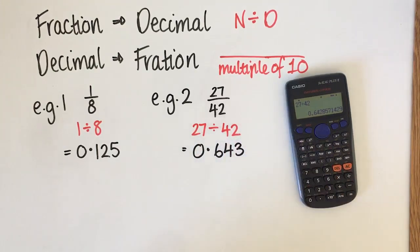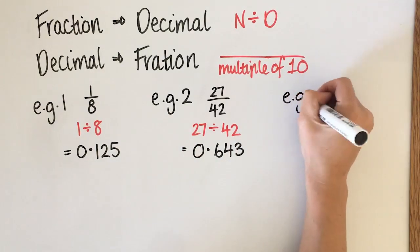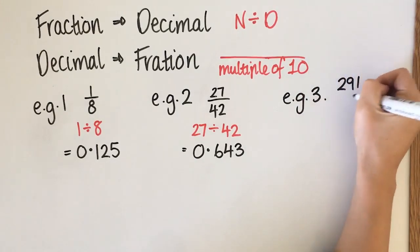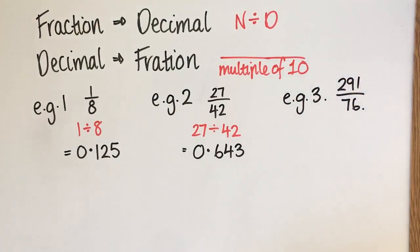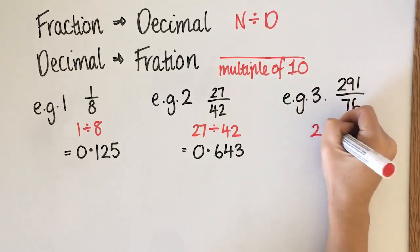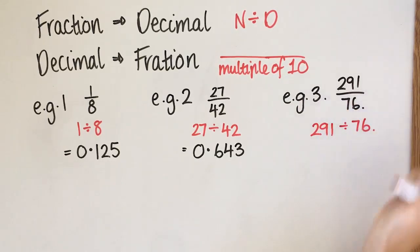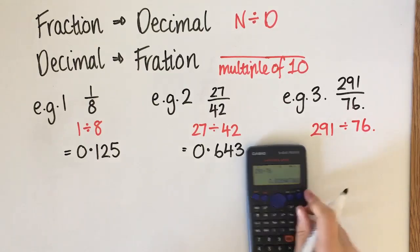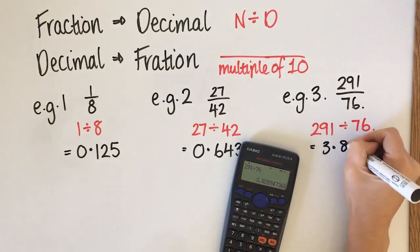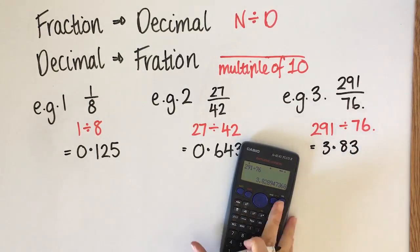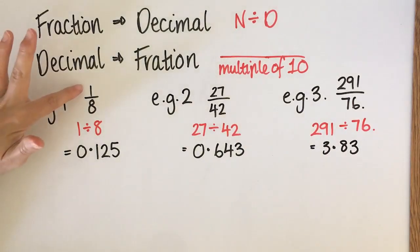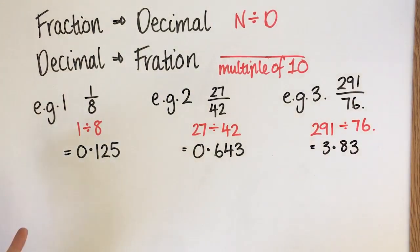Last example of going from a fraction to a decimal: 291 over 76. It doesn't matter that the numerator is bigger — I just do 291 divided by 76 on the calculator, and that gives approximately 3.83. Fractions to decimals is easy with a calculator: just do numerator divided by denominator and round if needed.